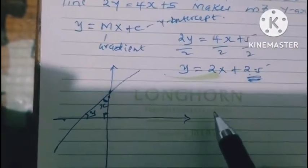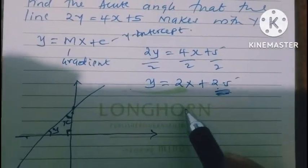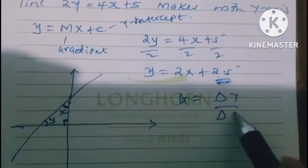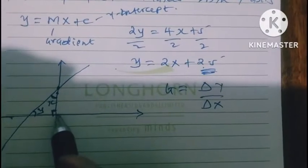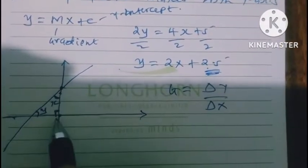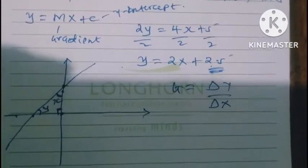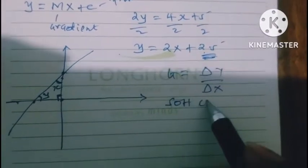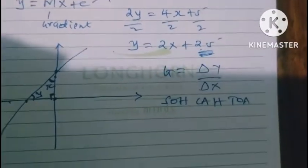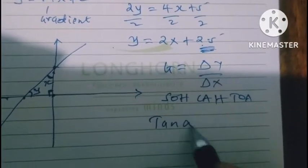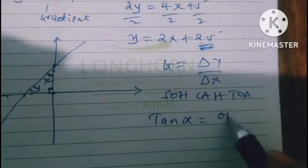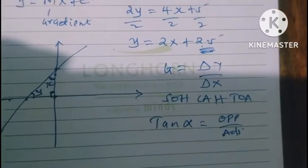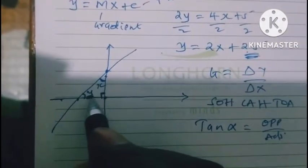For us to get that, as you know, that a gradient equals to a change in y over a change in x. This change that happens in y-axis, from y to y over a change that happens on the x-axis. Now, using SOHCAHTOA, you also realize that tan of an angle, let's say alpha, is the same as opposite over adjacent. But in this case, you realize that, if we were to refer to this angle y here,